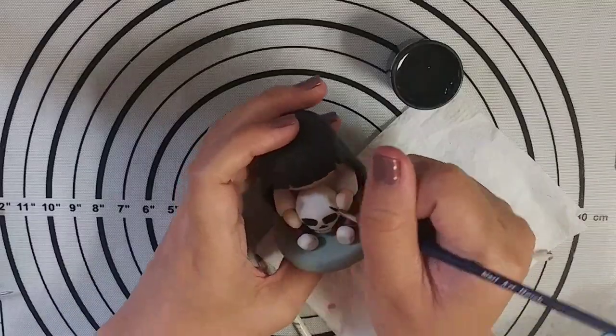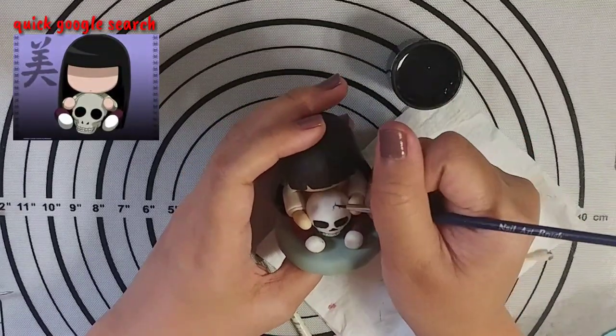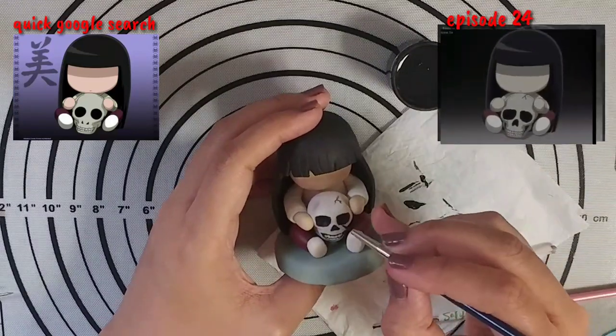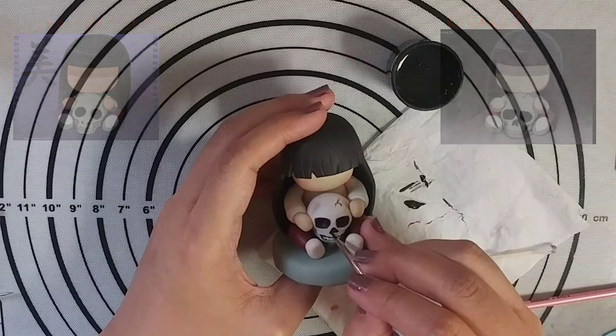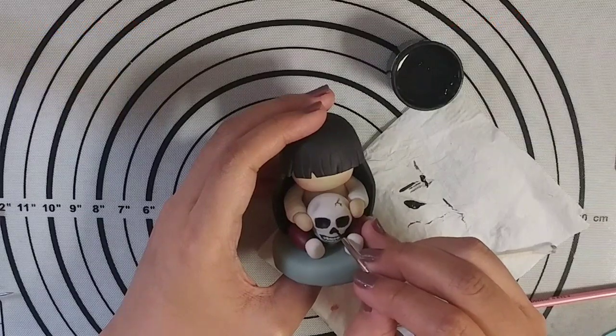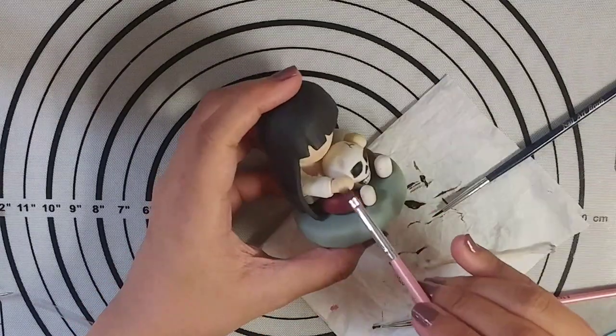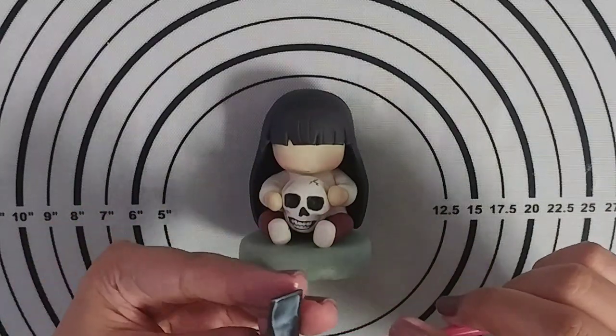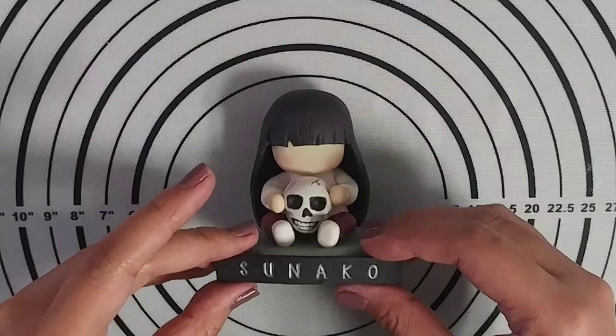I started this figure using this reference photo from Google Images but I knew something was off so I had to re-watch the episode this image was based on. And true enough, the skull designs were different. And now, Sunako-chan is finished.